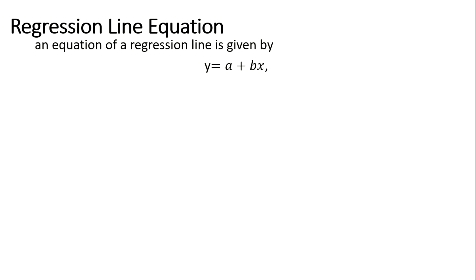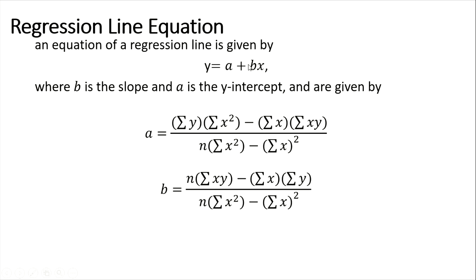This looks like the equation of a line using slope form: y equals mx plus b. Attached to x is our slope, b, which represents the steepness of the line. The value a is our y-intercept — the point where our graph intersects the y-axis.